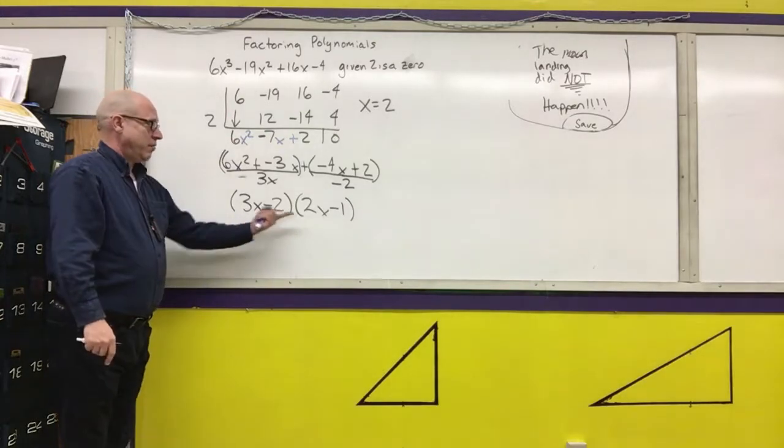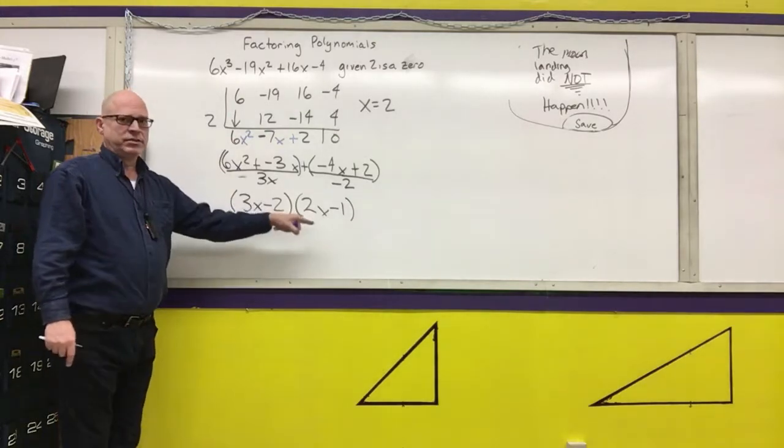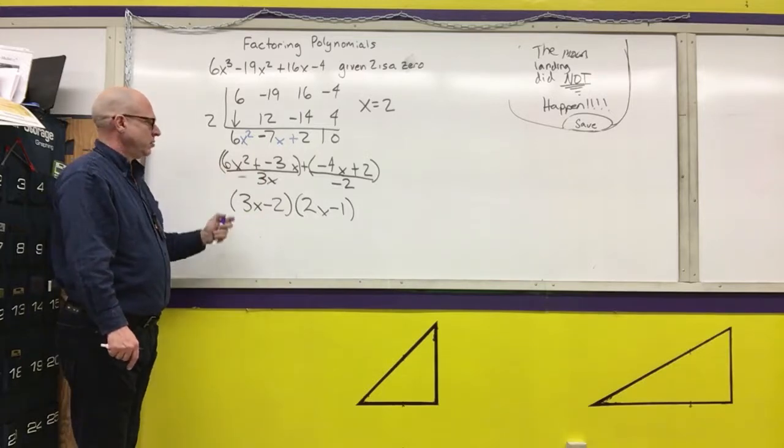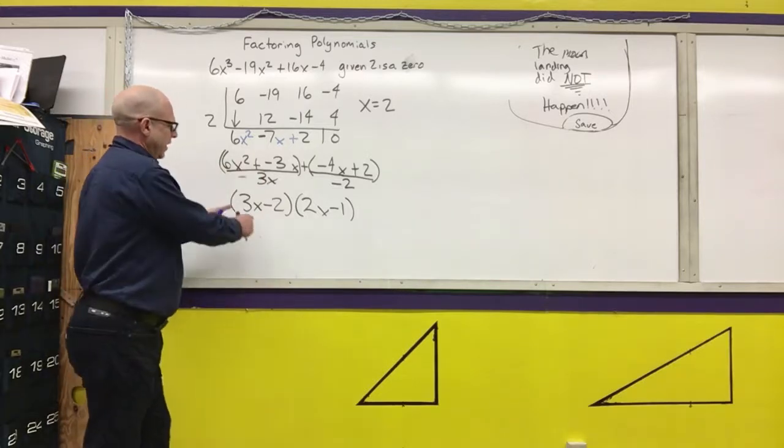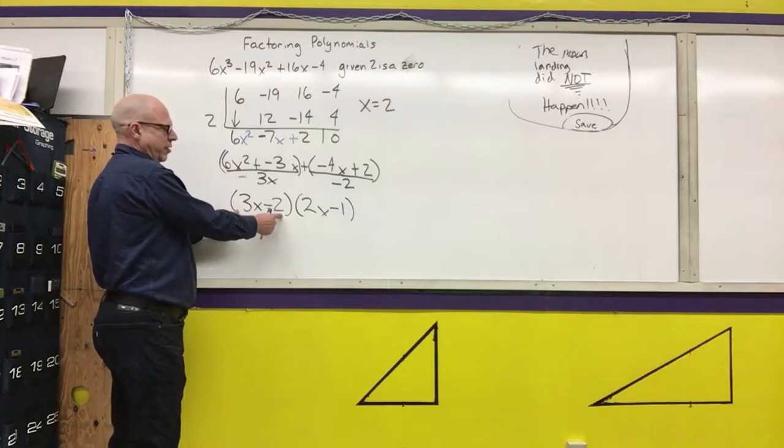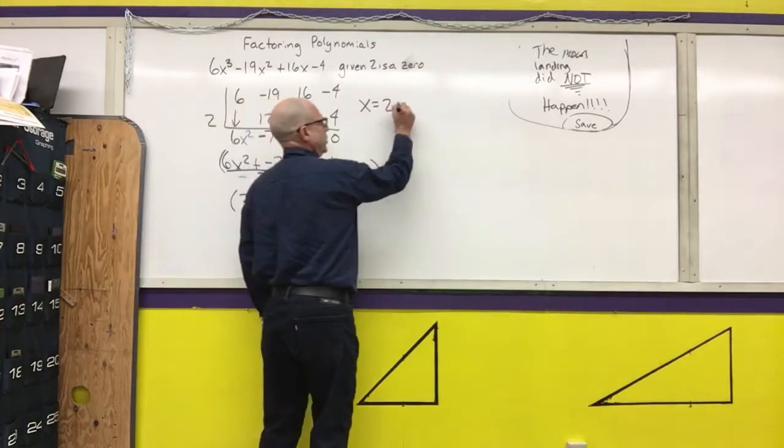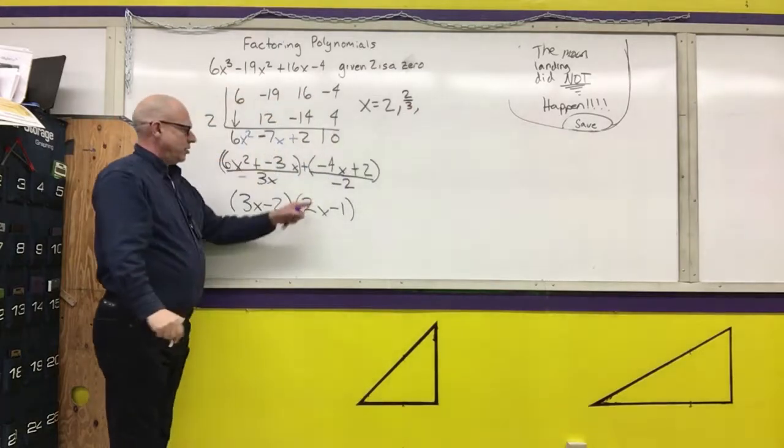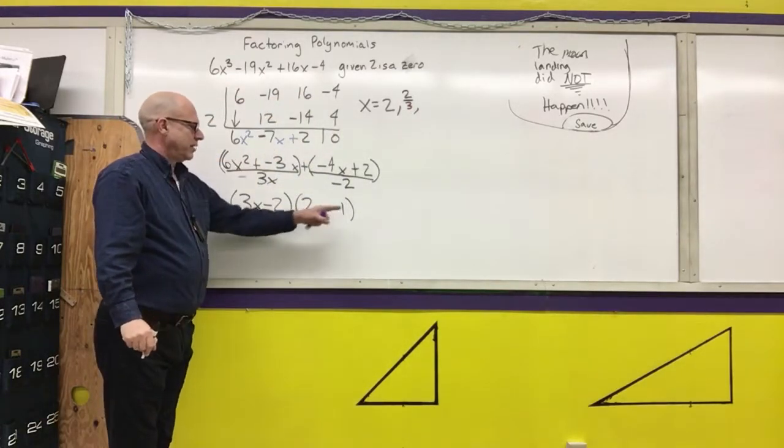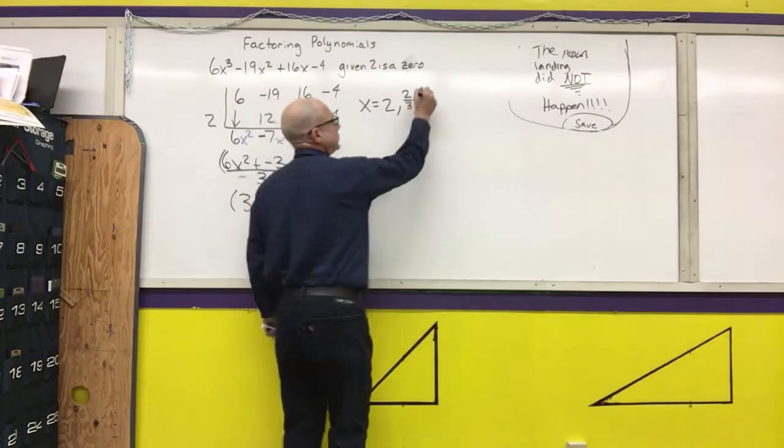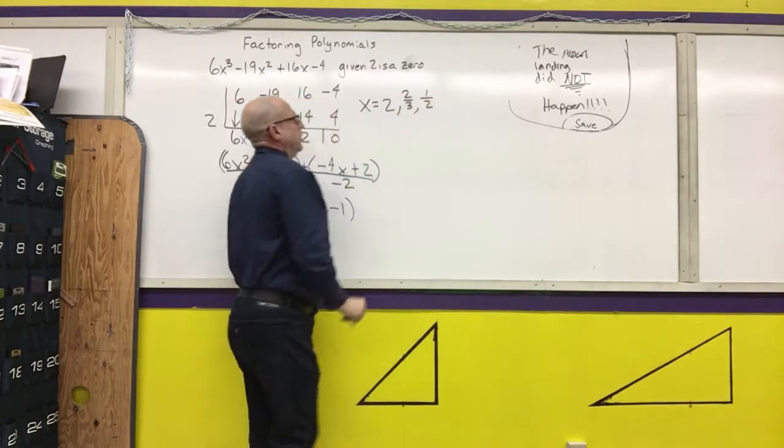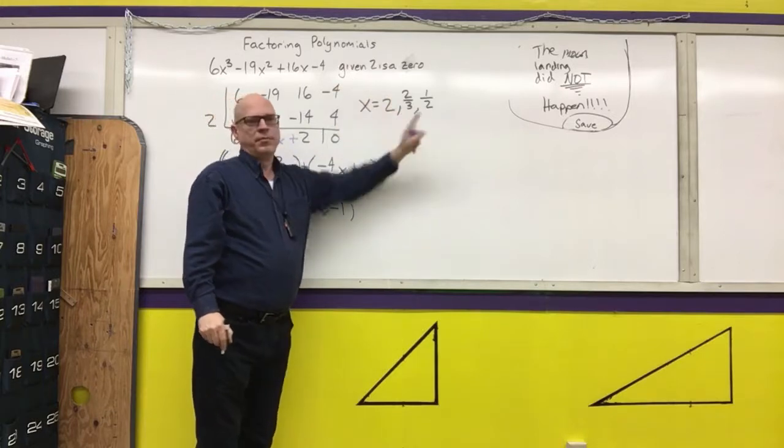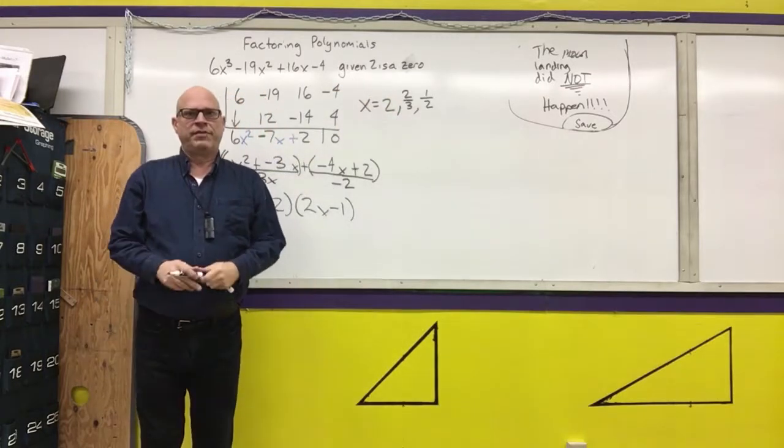This does not answer my question. This just gives me the factors. Now I need to set each of these factors equal to 0 to find the zeros or the solutions. If I set 3x minus 2 equal to 0, I get x equals 2/3. And if I set 2x minus 1 equal to 0, I get x equals 1/2. So I was given one of the zeros, and I was able to come up with the other two zeros by factoring the polynomial.